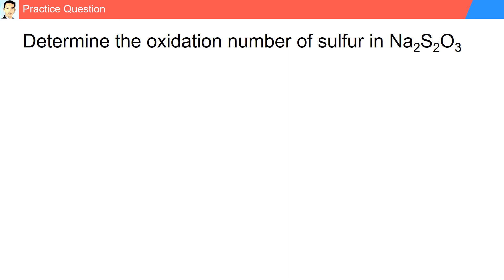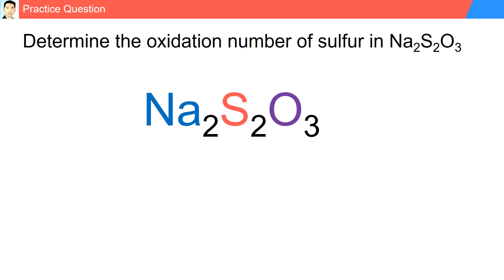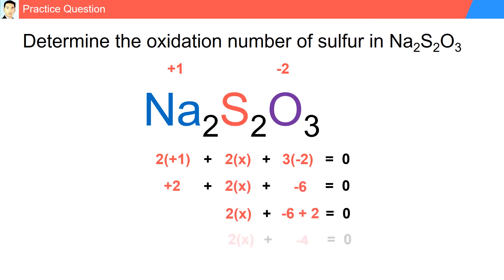Practice question: determine the oxidation number of sulfur in Na2S2O3. Sodium is found in group one, so it has an oxidation number of plus one — there are two sodiums. Oxygen has an oxidation number of minus two — there are three oxygens — and we have two sulfurs. The total sum should equal zero. Solving for sulfur, we get plus two.